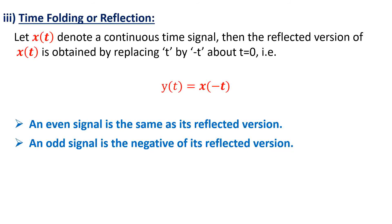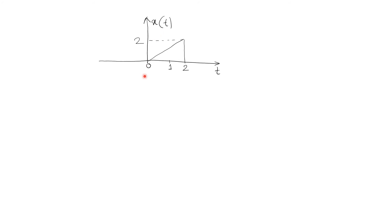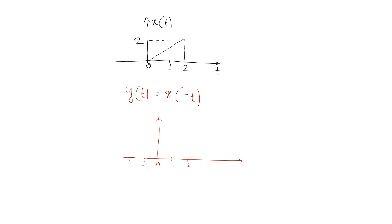We will take one example. Let this be a continuous time signal x(t) which exists between 0 and 2. Let y(t) = x(−t). Therefore, here y(t) is the reflected version of x(t). This is 0, 1, 2, minus 1, minus 2. Here each t is replaced by minus t. That is, the 0 point will remain the same, 1 will appear at minus 1, and the signal at 2 will appear at minus 2. Therefore, we can represent y(t) accordingly. The amplitude remains the same.